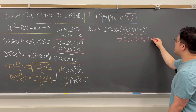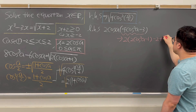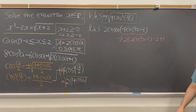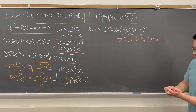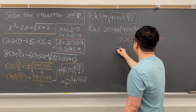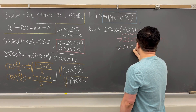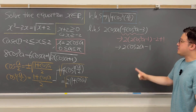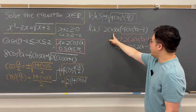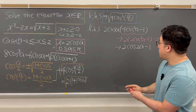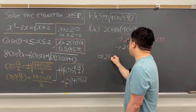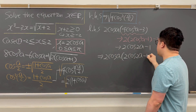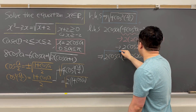We rewrite 4 cosine squared A minus 3 as 2 times (2 cosine squared A minus 1) minus 1. Now 2 cosine squared A minus 1 is cosine 2A, so the parentheses become 2 cosine 2A minus 1. After adding the negative 2 plus 1 to get negative 1, the left-hand side becomes 2 cosine A times (2 cosine 2A minus 1).